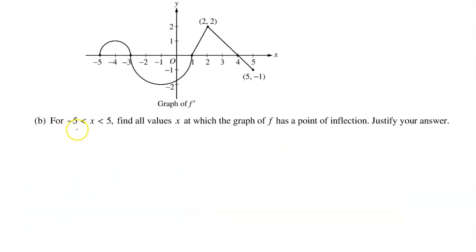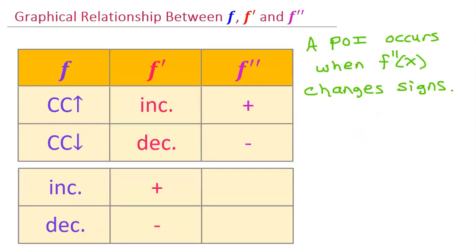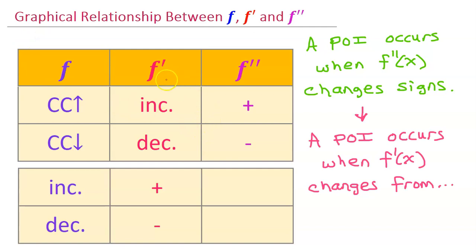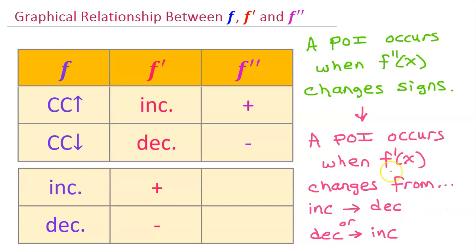Part B: on the open interval from negative 5 to positive 5, find all values of x at which the graph of f has a point of inflection. Justify your answer. A point of inflection occurs when f double prime changes signs. However, for this problem we are given the graph of f prime, not f double prime. Thinking about the relationship between f prime and f double prime: if f double prime changes signs, then f prime will change either from increasing to decreasing or from decreasing to increasing. So let's look at the graph of f prime and see where it changes from increasing to decreasing or vice versa.